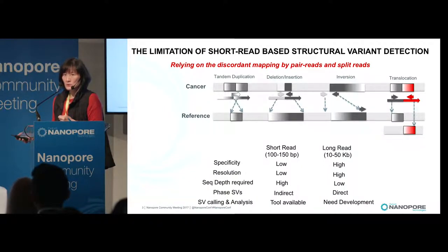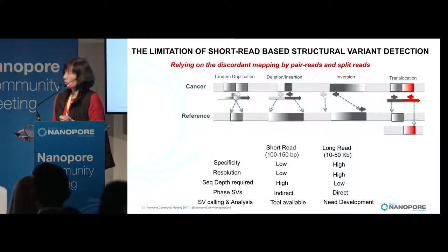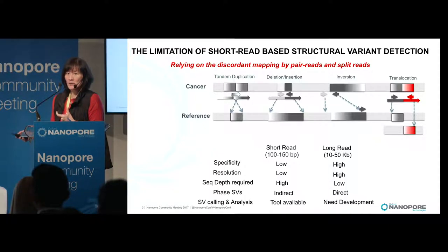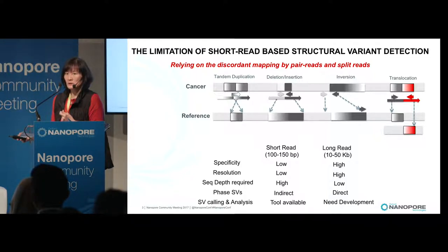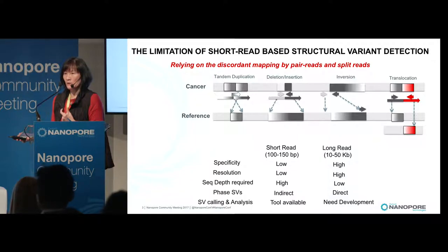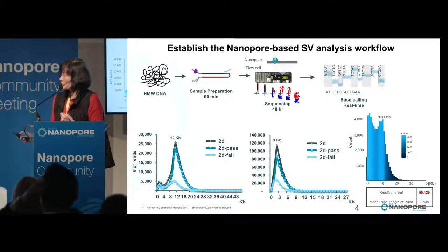However, the existing state-of-the-art tools for studying structural variation — when we started this work about a year ago — mostly used short reads. With short-read-based structural variation, many methods use discordant read pairs or split junction reads. That fundamental discovery mechanism requires very high depth and has certain limitations for specific structural variation types, for example short structural variations, structural variations residing in repeat regions, or structural variations involving short distances. We didn't think that was a comprehensive tool, so we wanted to explore long-read nanopore structural variation sequencing.